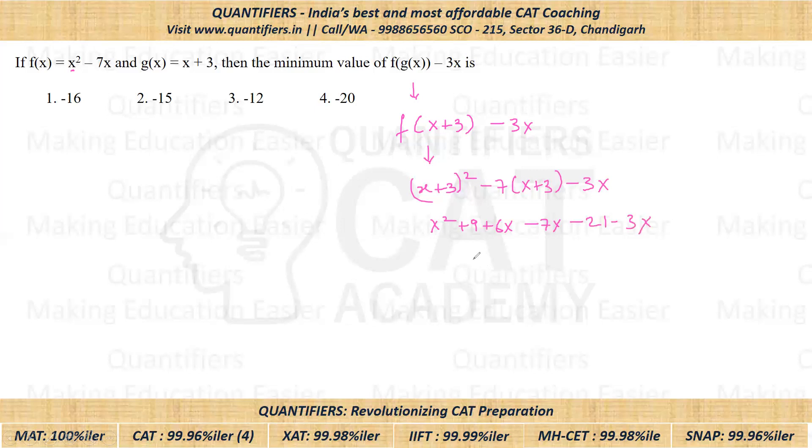Minus 3 times X, minus 7X and minus 3X would be minus 4X, and plus 9 minus 21 would give minus 12.